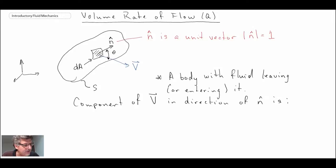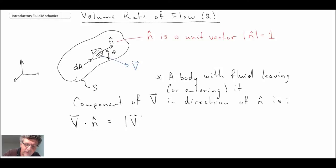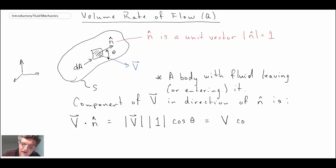To evaluate this, we use the dot product — a mathematical operator you've likely seen in math courses. We take the velocity vector v and dot it into the unit vector n. By definition of the dot product, this equals the magnitude of v, multiplied by the magnitude of the unit vector (which is 1), multiplied by cosine theta — the cosine of the angle between the velocity and the unit vector. This gives us v cosine theta, which is the velocity component leaving the surface.